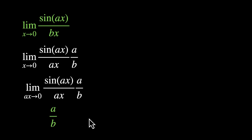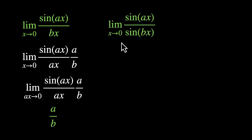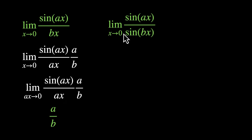Let's solve some more. Limit x approaches 0, sin(ax) / sin(bx). In this case, we have sin in the numerator and sin in the denominator. We need pairs. Here we have sin(ax) / ax, so we definitely need ax in the denominator. We can also have 1/bx in the numerator — that would make our life easier. Let's make that happen.